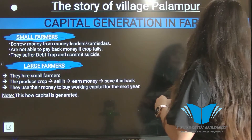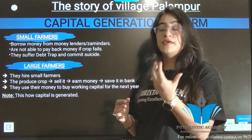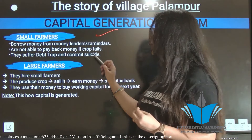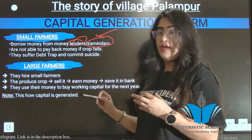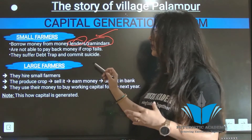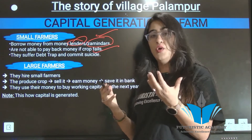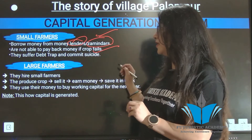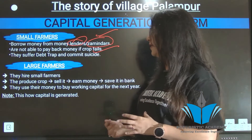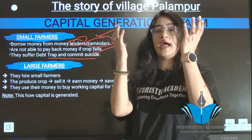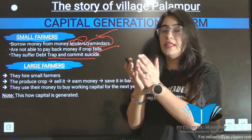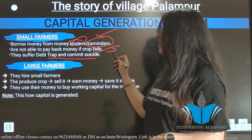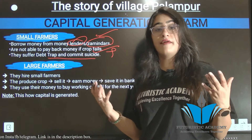Regarding capital generation in Palampur: small farmers borrow money from moneylenders. If their crops fail, they cannot repay the loan and fall into a debt trap — borrowing more to pay off existing debt, spiraling deeper into debt. In extreme cases where the situation cannot be resolved, some farmers are driven to commit suicide.